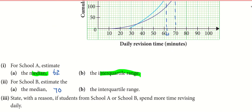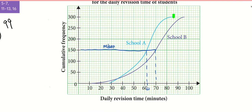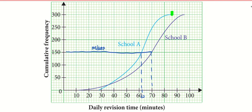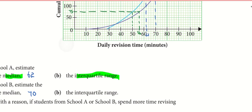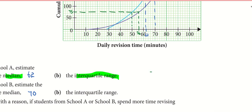Next, interquartile range. The lower quartile is one quarter of 300, or you can say half of 150. In this case, it's 75. The lower quartile for School A is 50, and for School B is 56. So I write it down.